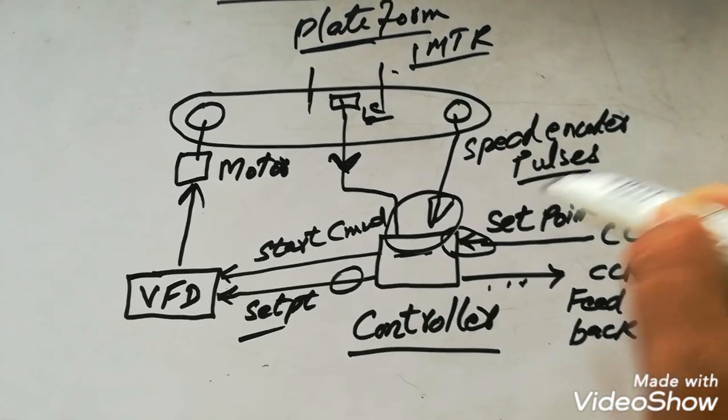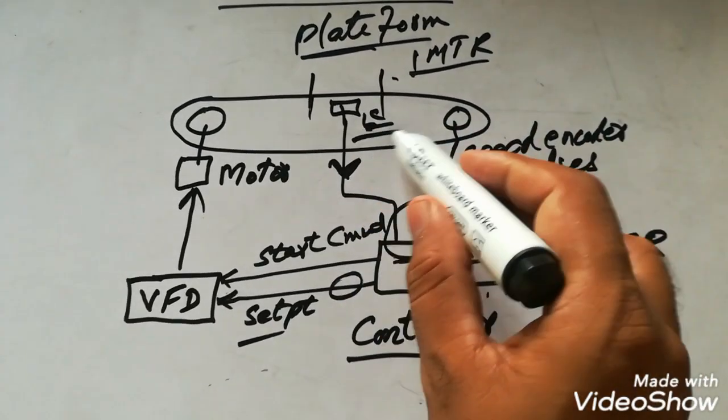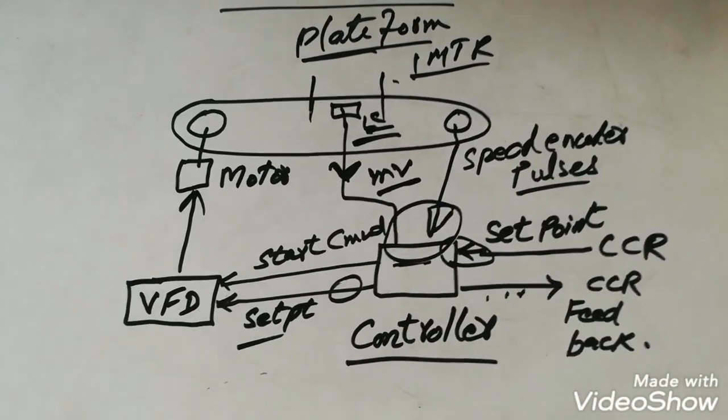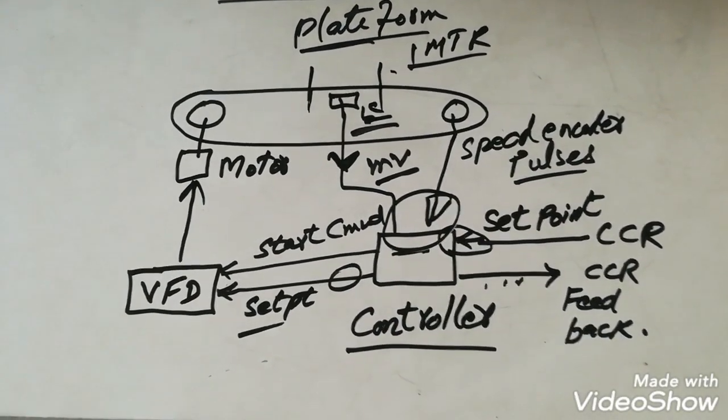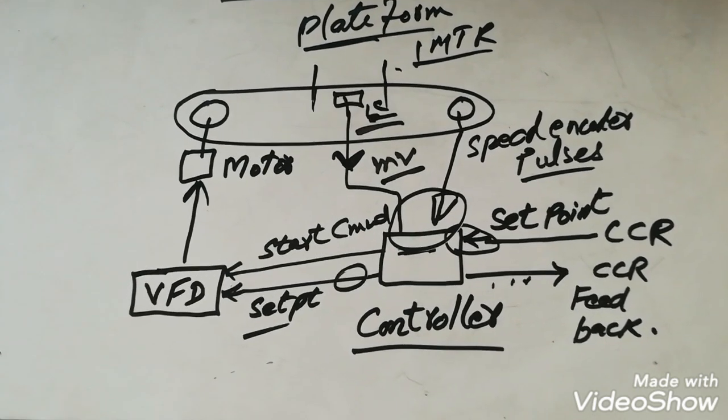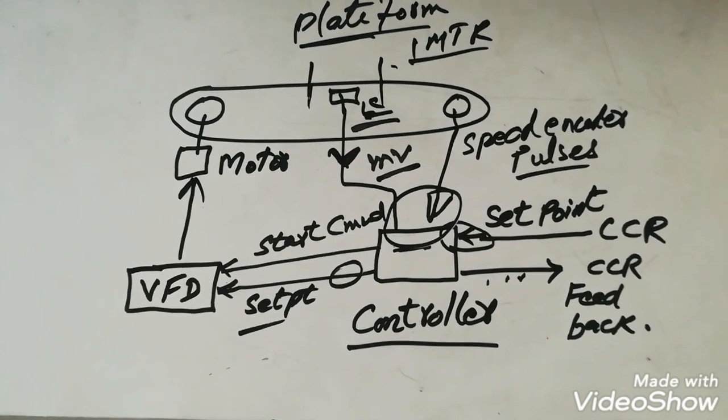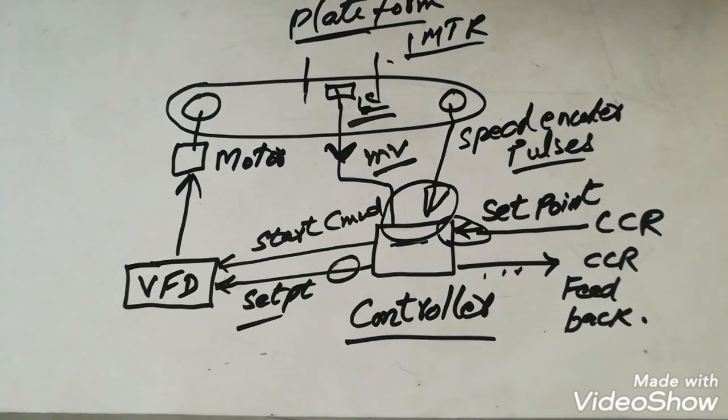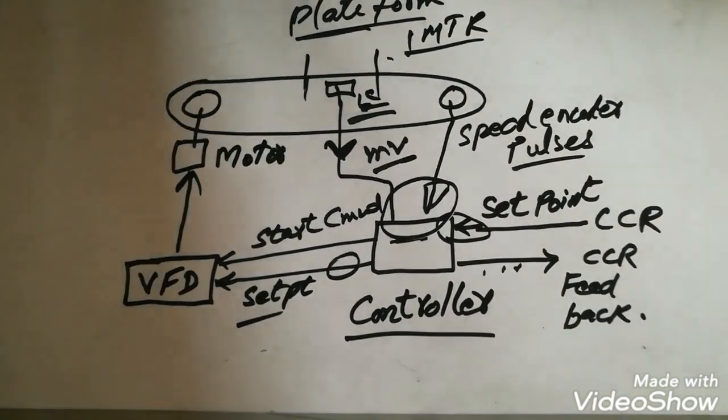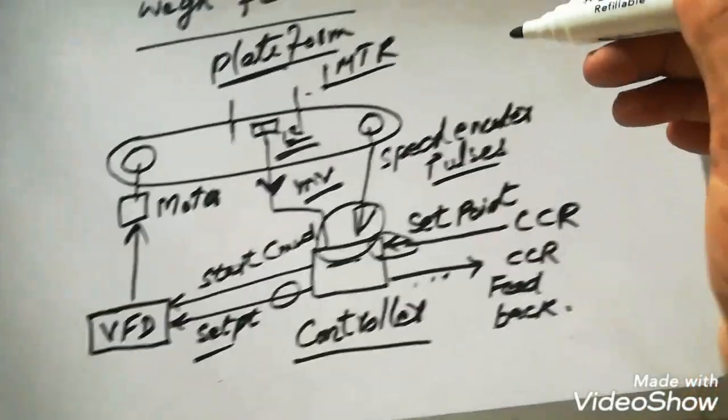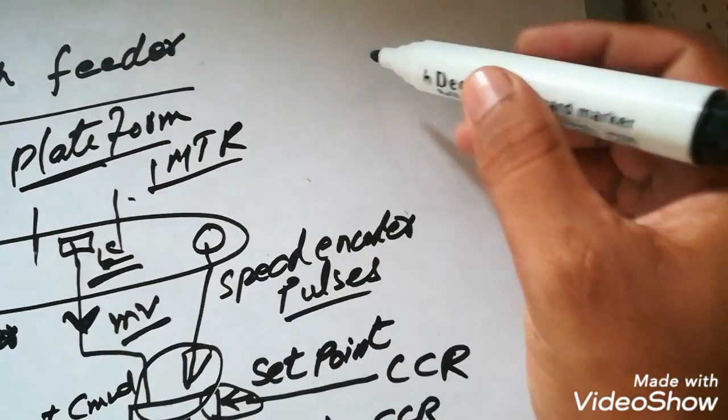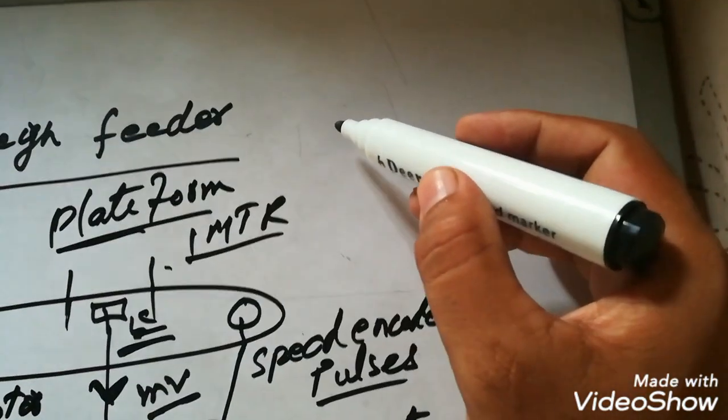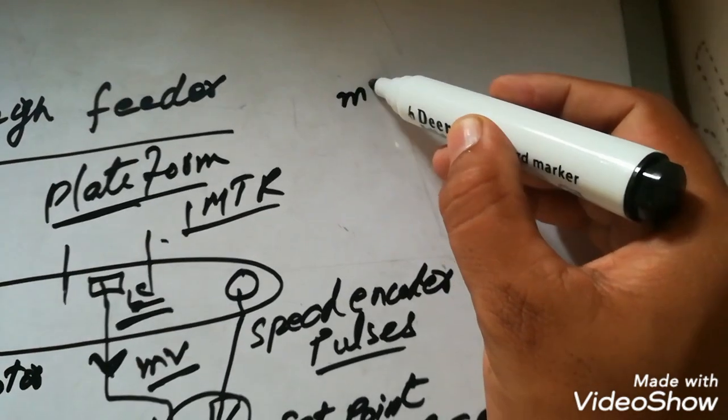Speed encoder will give pulses. It is just a proximity switch and load cell will give us the millivolt as per hour load. So these are all the inputs and outputs of the wave feeder. There may be also alarms from the controller to the operator.